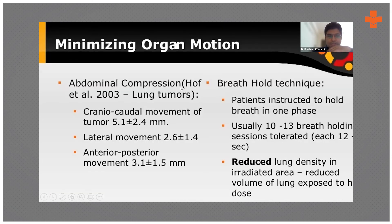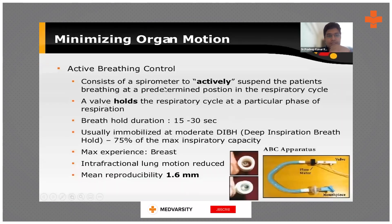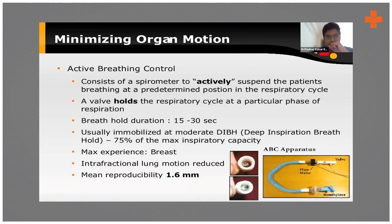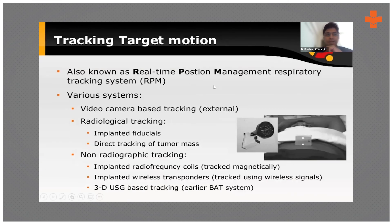The breath hold technique minimizes organ motion and can reduce the lung dose density significantly, helping to spare normal lung tissue. Another technique is active breathing control: the patient breathes actively and holds their breath for 15 to 30 seconds. Once practiced, the patient can be taken for active breathing control, simulating the same breath hold on the treatment couch, and radiation is delivered at that particular point of breath hold.